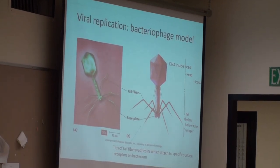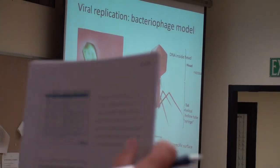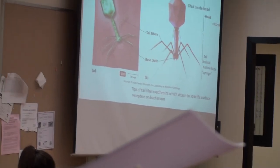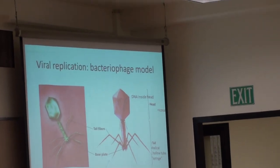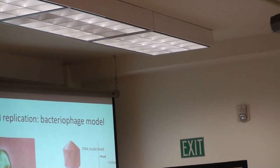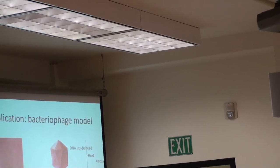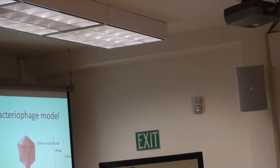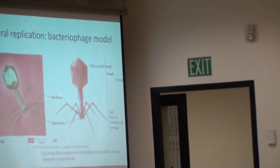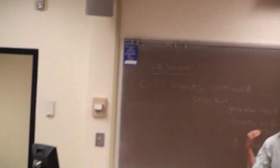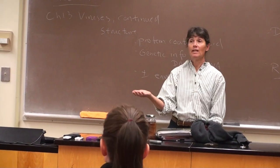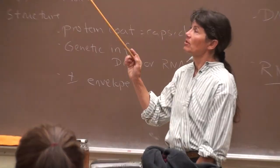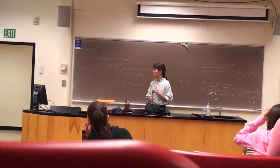We're going to quickly go through viral replication. One of the earliest models used to study how viruses replicate was bacteriophage — viruses of bacteria. The first studies were done on bacteriophages because there were no ethical or moral issues with using bacteria as hosts, and the experiments are relatively inexpensive. One of the problems with viruses is they can only replicate inside a cell — you can't grow them on non-cellular media in the lab.